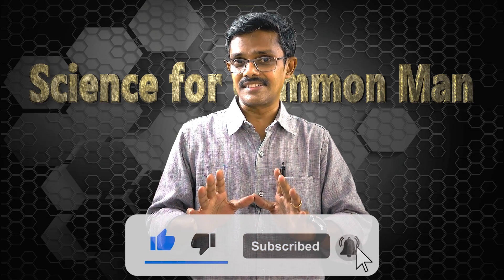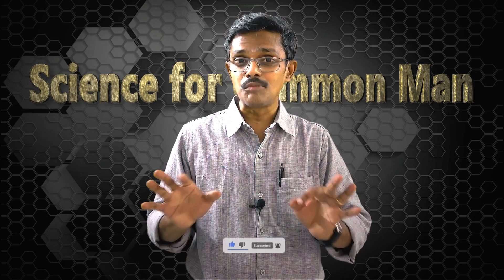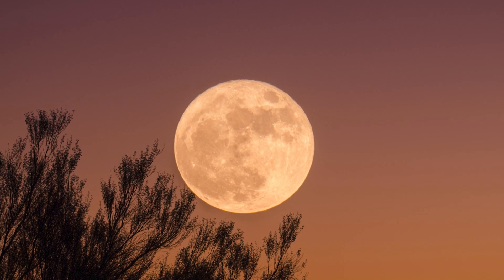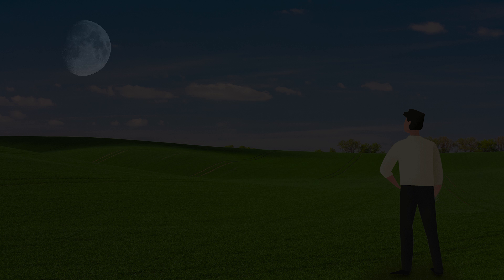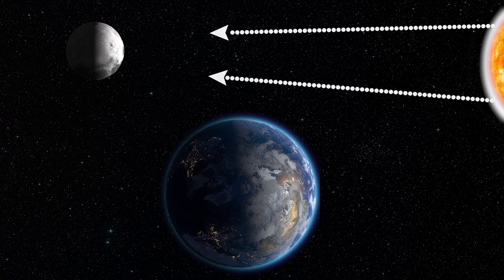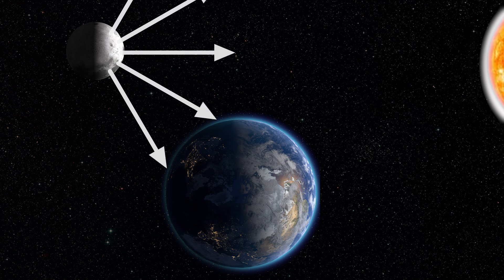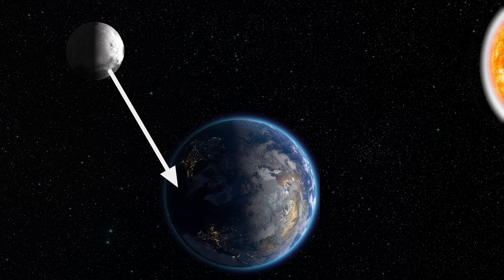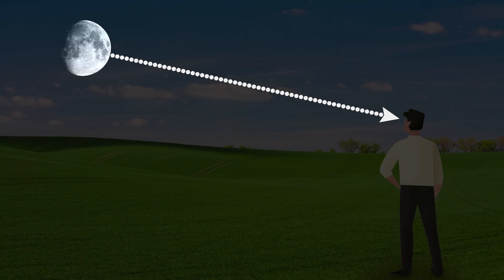Let's first understand how we see an object. We all have seen this beautiful moon. Let's understand how we see it. Moon is certainly not producing its sunlight but it receives light from the sun. When sunlight falls on its surface, it scatters or reflects light in all directions and that reflected light travels from moon and reaches our eyes and we see it.